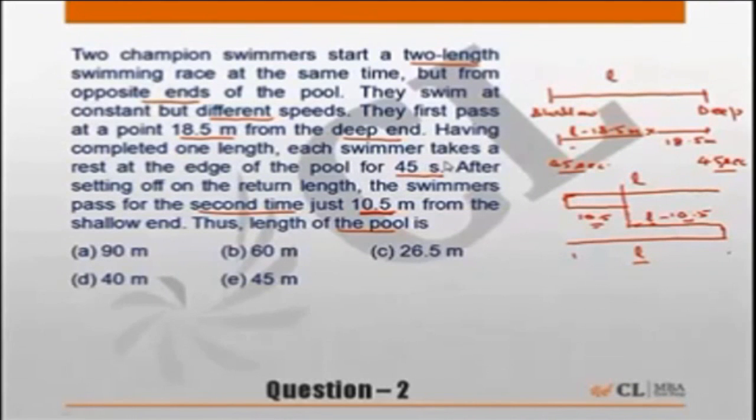So what we are left with is this data of 45 seconds. Now this data is an irrelevant piece of data. It has been given just to confuse. It has got no value because both of them rested for 45 seconds after reaching the opposite end, so it does not really matter. We need to find the length of the pool.